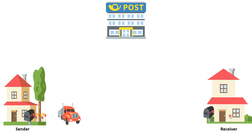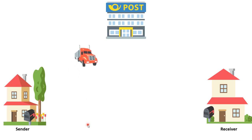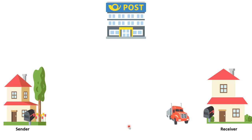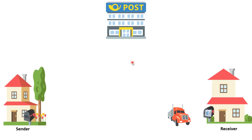Let's say the sender sends a mail. The mail is collected by the transport service, then it goes to the main post office where the destination address is checked, and it is routed to the correct destination with the help of the transport service. Then the mail is delivered to the correct recipient. The mandatory parameters here are the sender, the recipient, the transport service, and the post office — which decides where the email should be routed. Email communication works the same way on the internet.